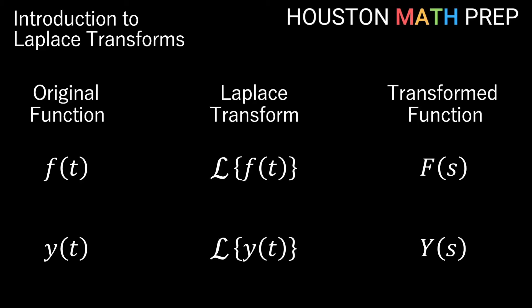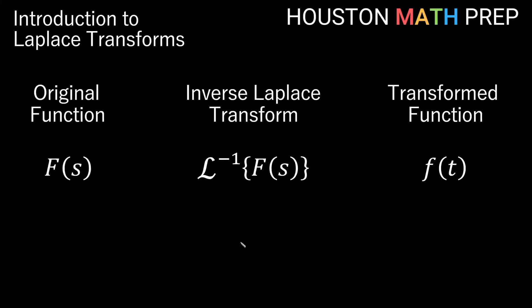If we start with some function y of t instead of f of t, when we take the Laplace transform of y of t, we'll simply call it Y of s instead of F of s. Once we get equations in terms of s, we'll solve for F of s or Y of s. Once we have that solution, we'll need to take the inverse transform. When we take the inverse transform of a function of s, we'll use the inverse function notation — the inverse Laplace transform. It looks like a power of negative one, but this is actually inverse. So the inverse transform of our F of s will give us back some function of t.